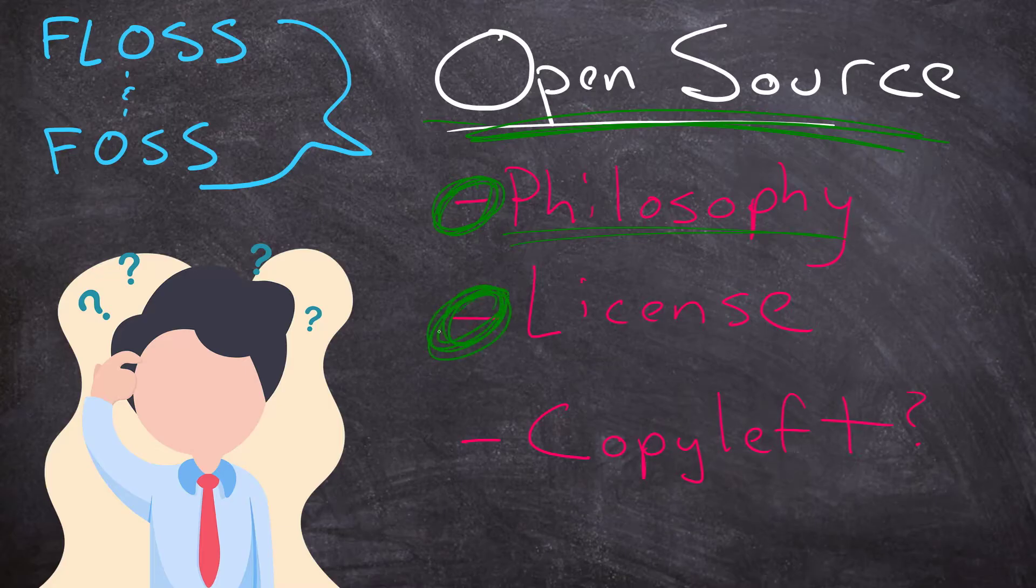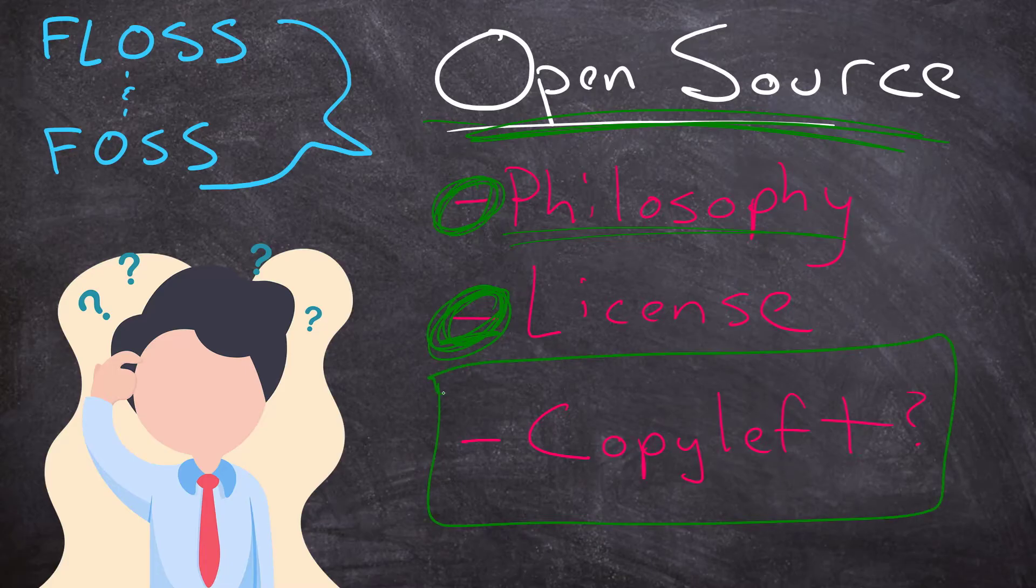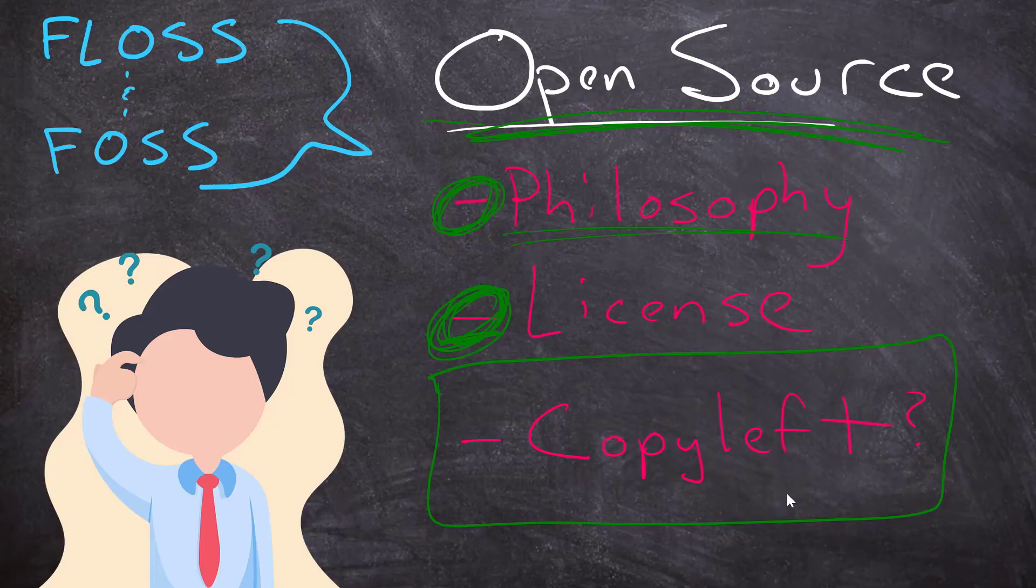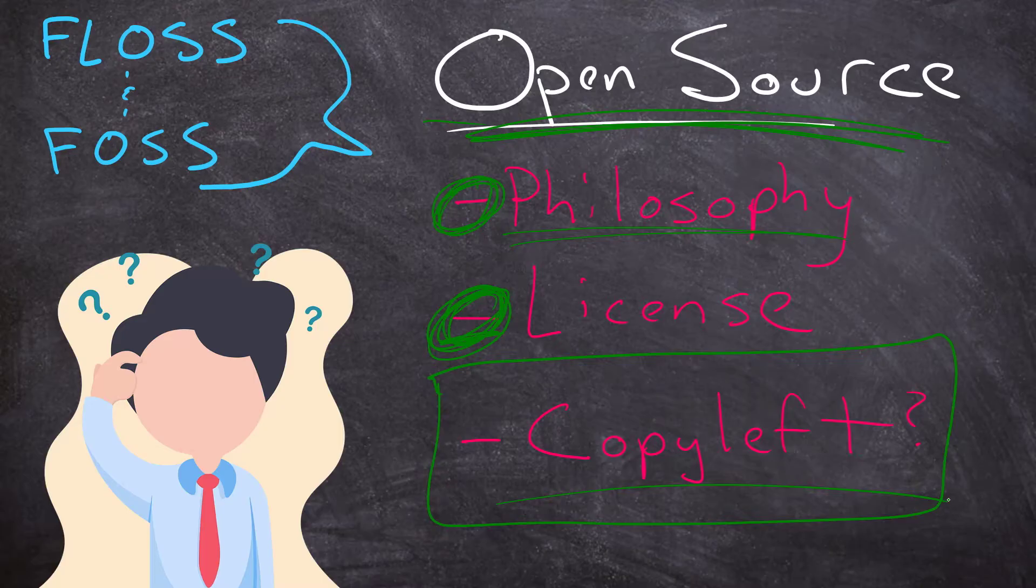There are licenses involved because that will dictate what you can and can't do with a particular bit of source code for a program. The term they've coined for this concept is called copyleft. It's copyleft because copyright means you can't use somebody else's stuff. But with open source, you can use somebody else's stuff. So it's copyleft. The whole idea of copyleft and open source licenses all come down to freedom.